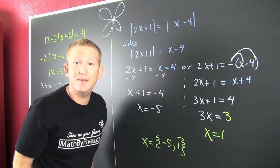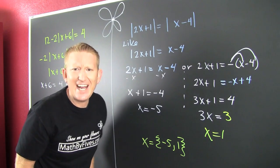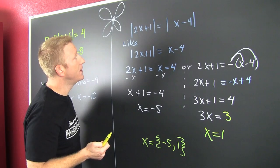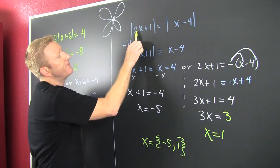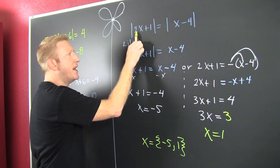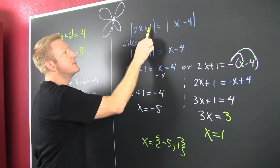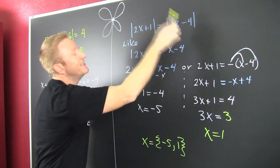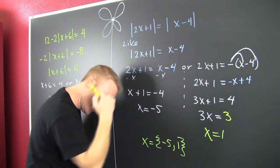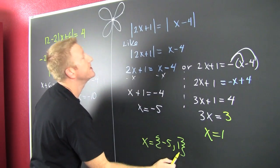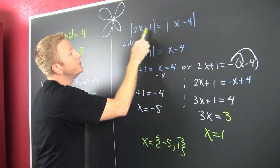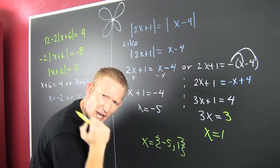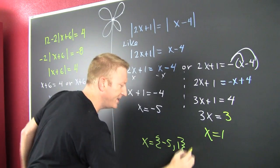But if you don't believe me, throw it back in. For x equals minus 5: that's minus 10 plus 1, which gives 9 — yes, that checks out. For x equals 1: 2 plus 1 is 3 — yes, that checks out too.